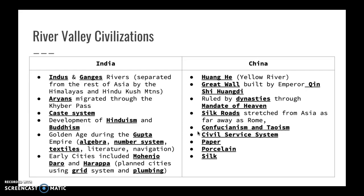India developed along the Indus and Ganges Rivers, separated from the rest of Asia by the Himalayan mountains. The Aryans migrated through the Khyber Pass through the Himalayas. The Hindus created the caste system, their social system of different classes. Two religions developed in India: Hinduism and Buddhism. India is also known for the Gupta Empire, which created algebra, the number system, the concept of zero, textiles, and navigation. Early cities included Mohenjo-daro and Harappa, both well-planned cities using a grid system and plumbing.